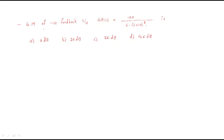Hello everyone. In this session we will discuss some more problems regarding the Bode plot. The problem is: the gain margin of a negative feedback system is GH(s) = 100 / [s(s+10)²]. The given options are 0 dB, 20 dB, 26 dB, and 46 dB. So first, write down the given data: the open loop transfer function GH(s) = 100 / [s(s+10)²].